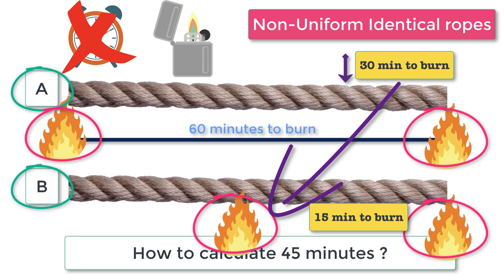To summarize: burn rope A from both ends and rope B from one end. Rope A burns completely in 30 minutes. When rope A is done, light the other end of rope B. Rope B then takes another 15 minutes to burn completely. That is how you measure 45 minutes.